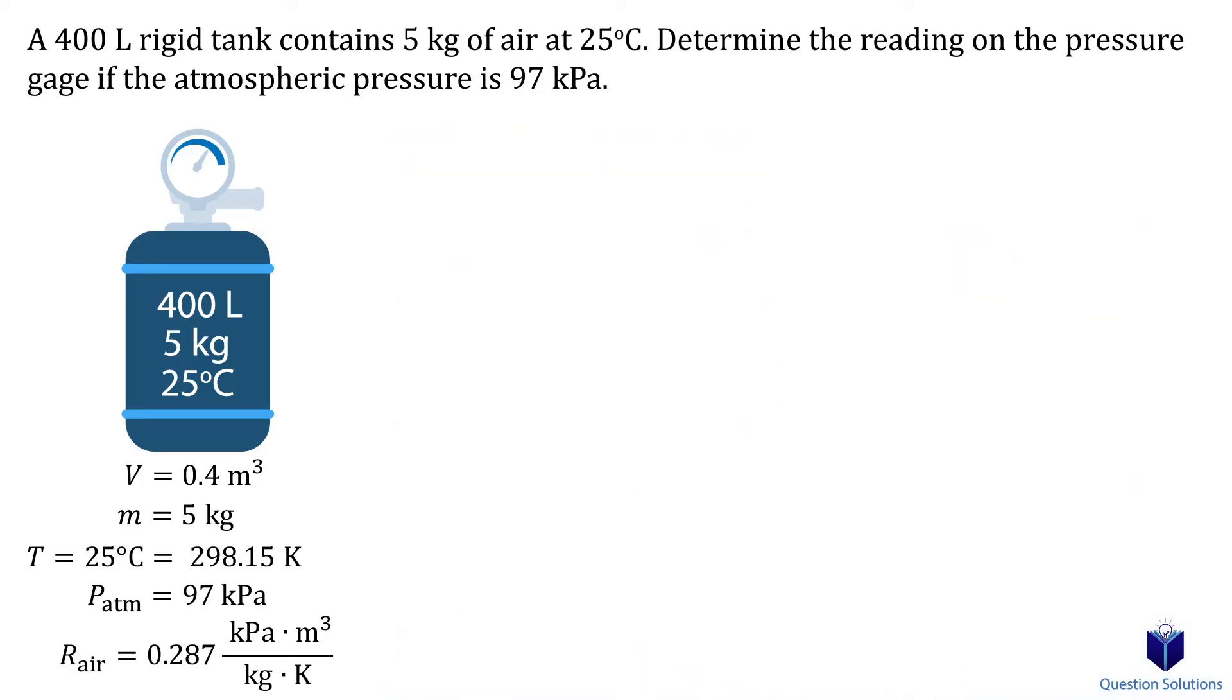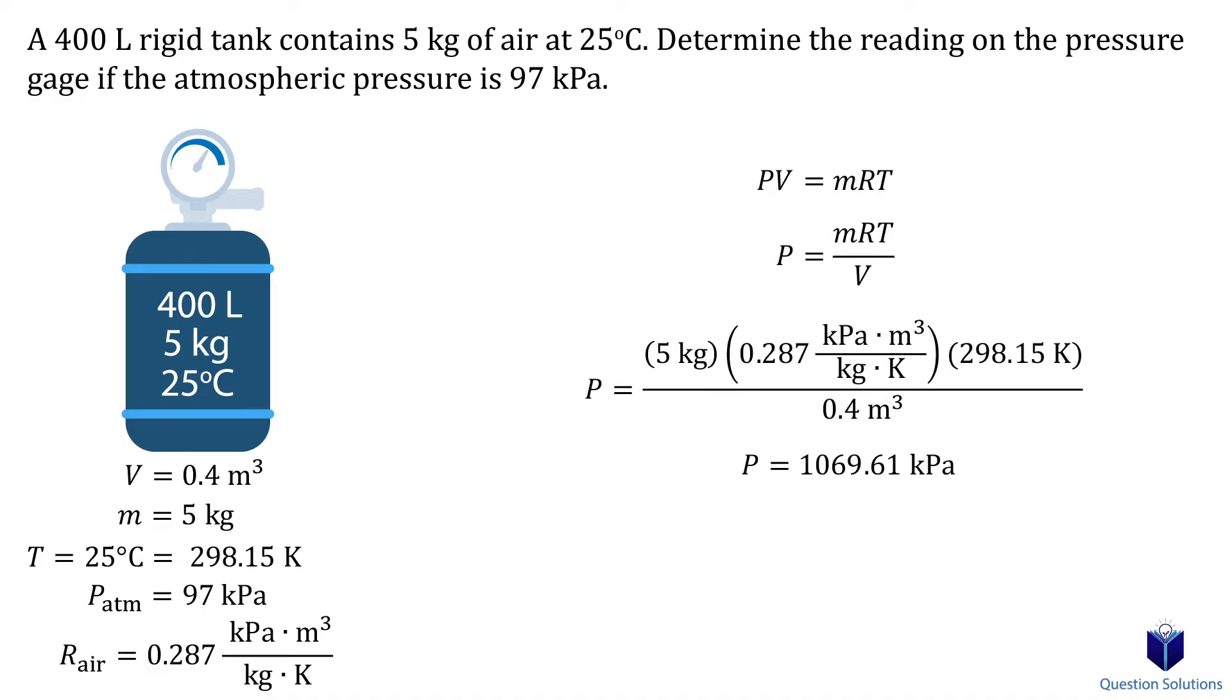To find the pressure, we need to write down the ideal gas equation. Let's isolate it for pressure, and now we can plug in our values. This value is the absolute pressure in the tank. Now all we need to do is subtract the atmospheric pressure from this value, and we get the gauge pressure.